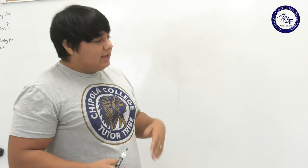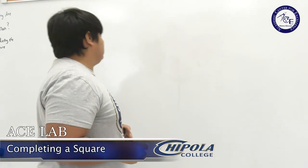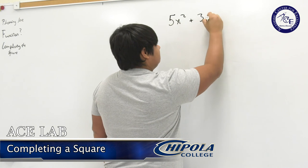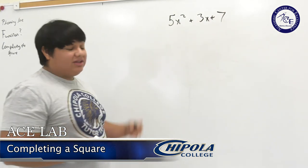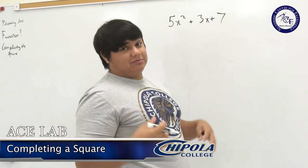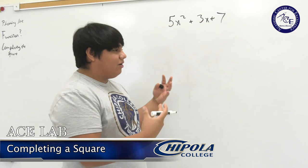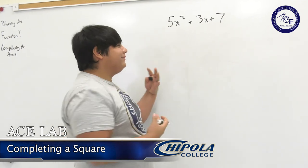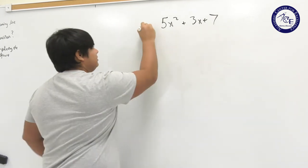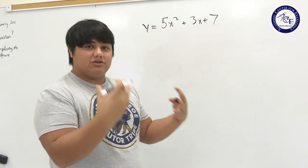Now let's talk about parabolas a bit more in depth. We're going to talk about something called completing the square. If I give you something like y equals 5x squared plus 3x plus 7, we could plot that - it would be some kind of parabola - but rather than trying to figure out what this means, what the slope is and what the y-intercept is, we're going to do something called completing the square. That's going to help you be able to draw this and understand what's really going on.